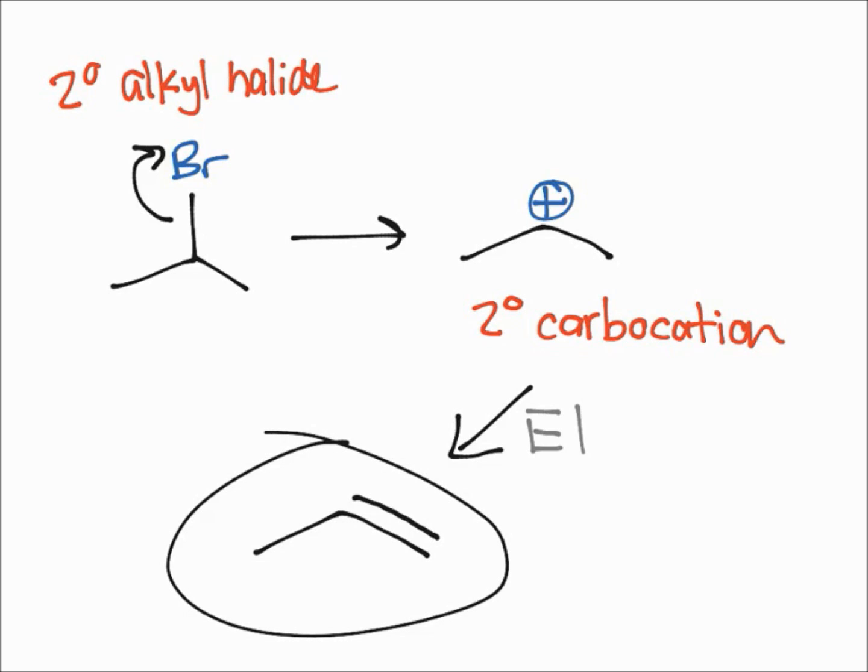The secondary alkyl halide will undergo E1 elimination, but due to the fact that this secondary carbocation is not the most stable carbocation, this secondary alkyl halide undergoes E1 elimination slower than tertiary halides, which we'll talk about on this next page.